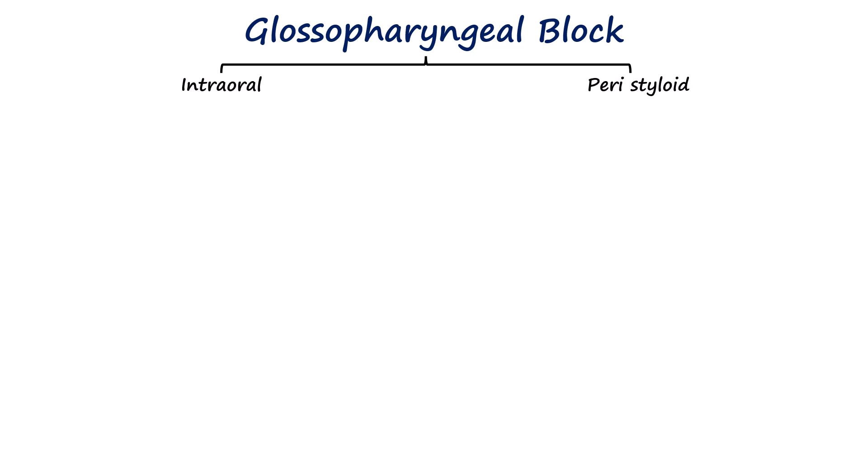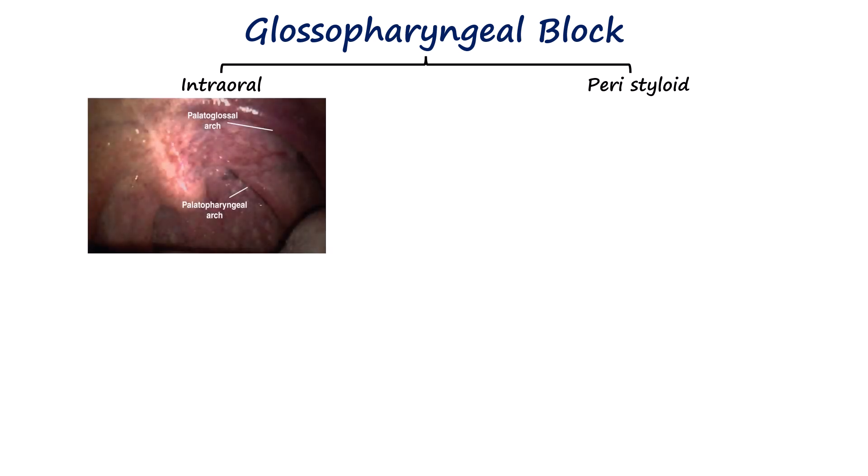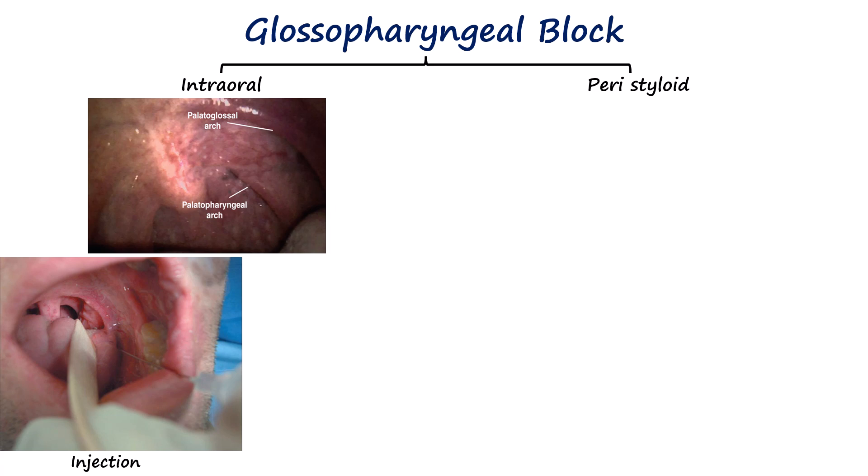There are two approaches described for this block: the intraoral and the peristyloid approach. For the intraoral approach, the patient needs adequate mouth opening so that the posterior tonsillar pillar or palatopharyngeal arch is easily visible. The oropharynx also needs to be topicalized with lidocaine spray before attempting the injection. Then, using a tongue depressor to expose the posterior tonsillar pillar, we inject about 2–5 ml of 2% lidocaine submucously at the caudal aspect of the posterior tonsillar pillars, approximately 0.5 cm lateral to the base of the tongue. The needle is advanced only about ¼ to ½ cm depth, using a 22 or 25 gauge needle, and it is important to aspirate before the injection. We then repeat it on the other side.